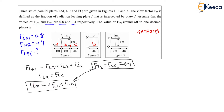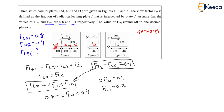Substituting into our equation: F_LM equals 0.8, which equals 2·F_LA plus F_LB, which is 0.4. Therefore 2·F_LA equals 0.4, so F_LA equals 0.2. And since A and C are symmetric, F_LA equals F_LC equals 0.2.